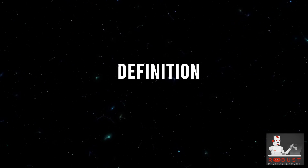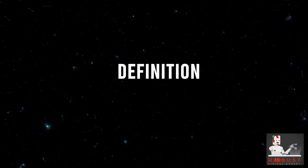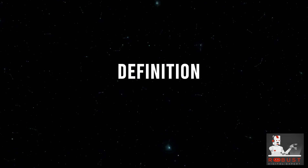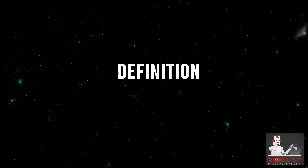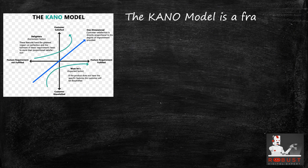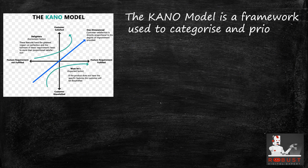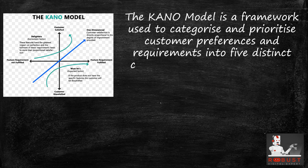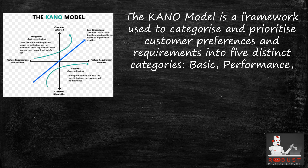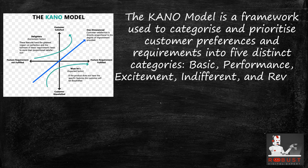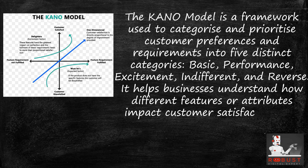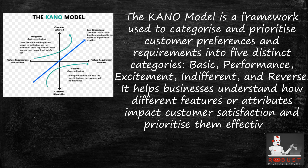Definition: The Kano Model is a framework used to categorize and prioritize customer preferences and requirements into five distinct categories: basic, performance, excitement, indifferent, and reverse. It helps businesses understand how different features or attributes impact customer satisfaction and prioritize them effectively.